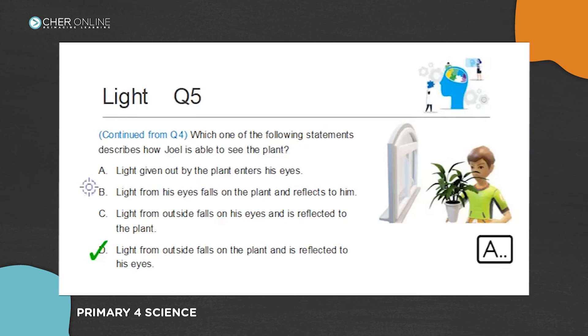The answer is not A. Remember, the eyes don't give out their own light, and the plant does not give out its own light. Also, light doesn't fall on the eyes and into the plant. The eyes are always the last part. Reflected light is reflected into the eyes. Always keep that in mind.